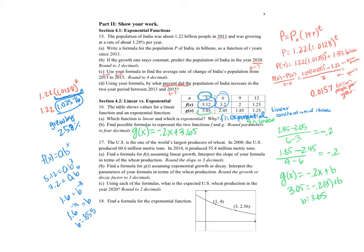That gives me the value of B. Now I can find the value of A by using the value of B. I can plug in 5.12 equals A times 0.855 to the 3rd. Divide, and I get 8.1917. So F of X is equal to 8.1917 times 0.855 to the X.